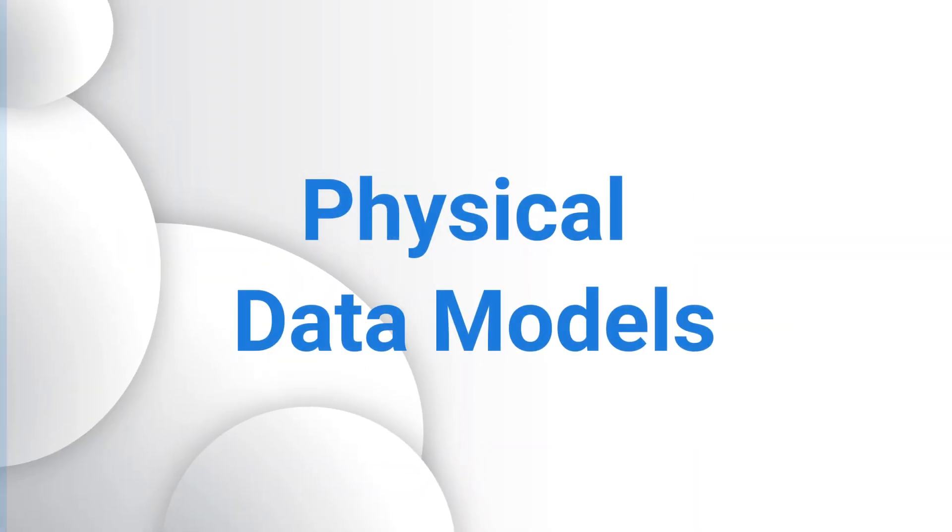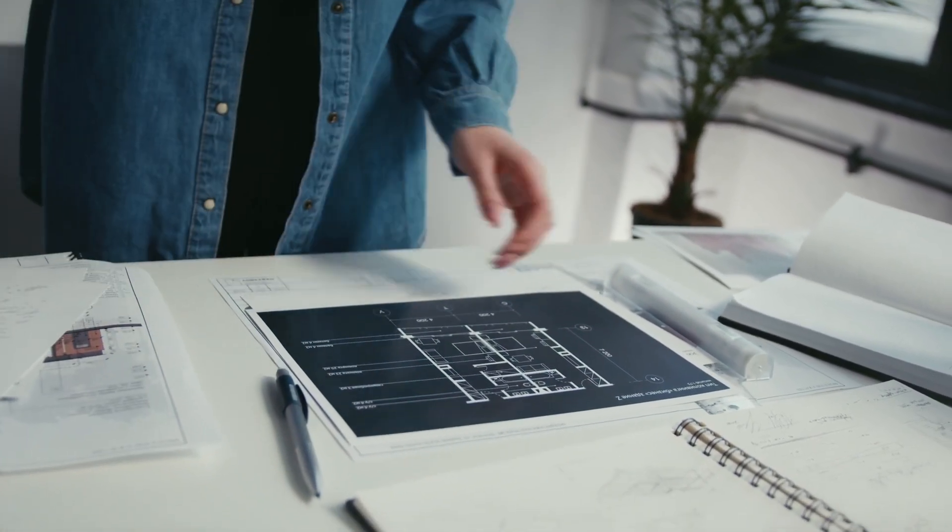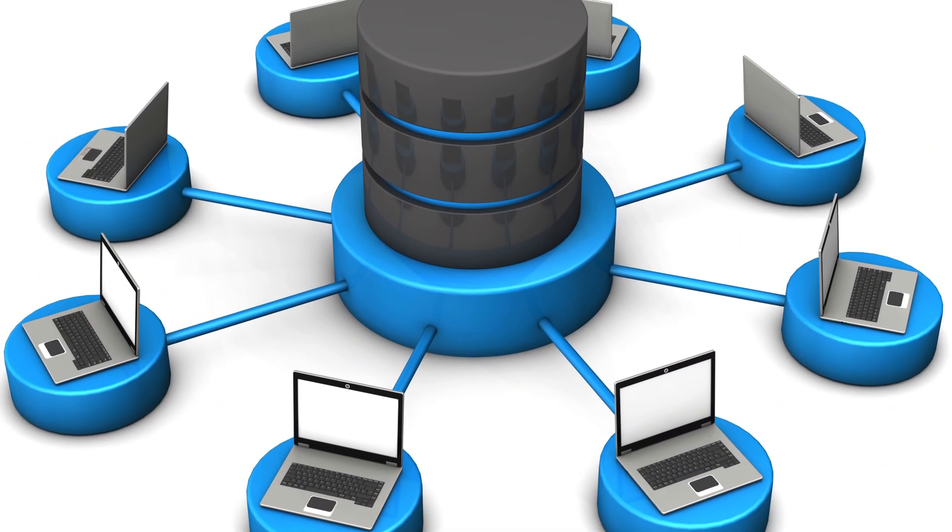Now, physical data models — we're down to picking out the fixtures and finishes. The physical data model is like the final architectural blueprint for building the house. It details exactly how to construct the database at the technical level, including all tables, columns, relationships, and database-specific features like indexes, keys, constraints, and field descriptions. It's tailored to the specific technology used — such as a database like MySQL, data warehouses like BigQuery or Snowflake, or a reporting tool like LuckyBI.